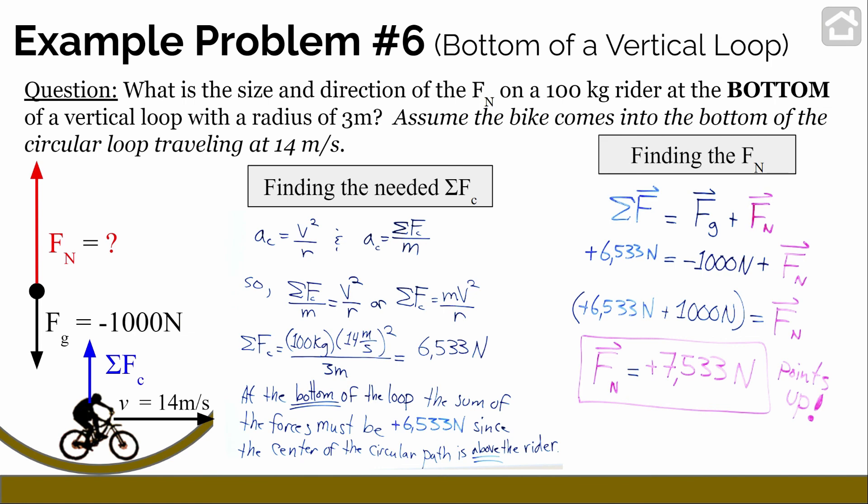Hopefully these two example problems help you start to think through what's going on when an object is involved in vertical circular motion — whether it's a rider, a car, a roller coaster, a bike, or anything else moving in a curved path in the vertical plane.